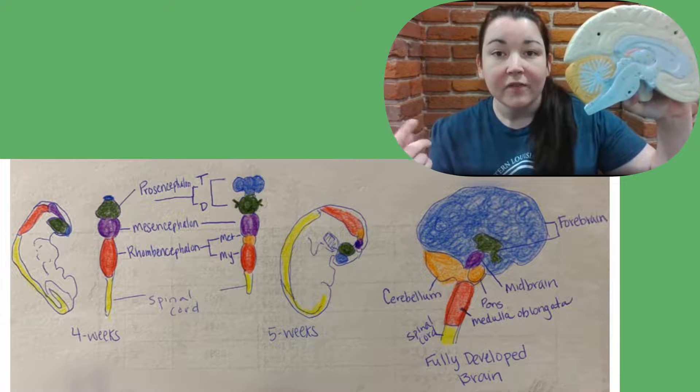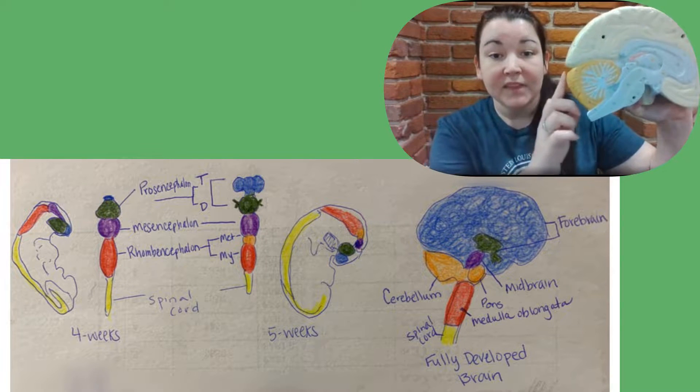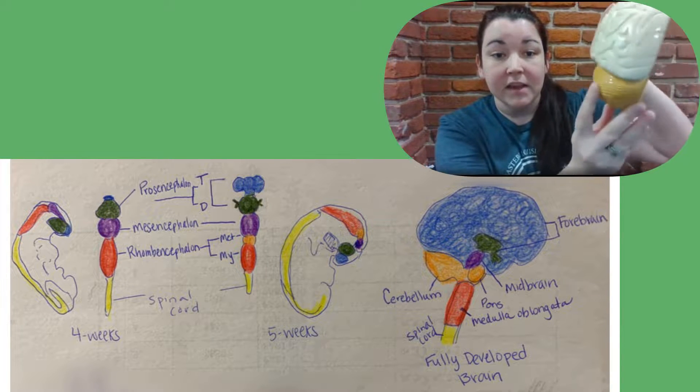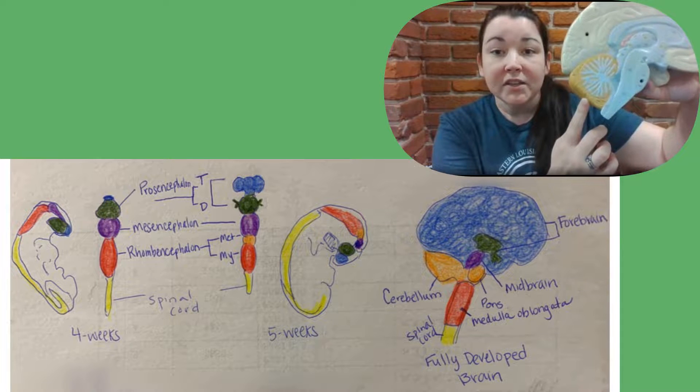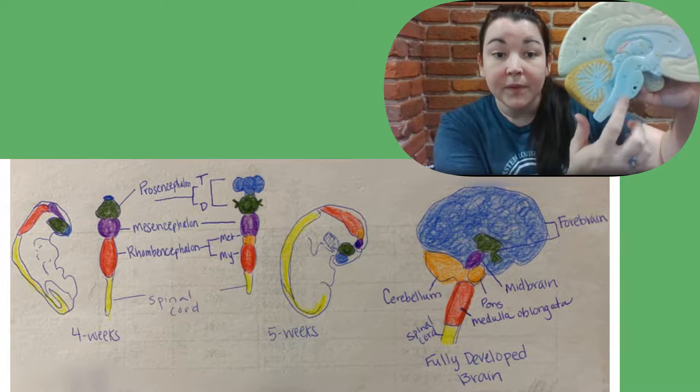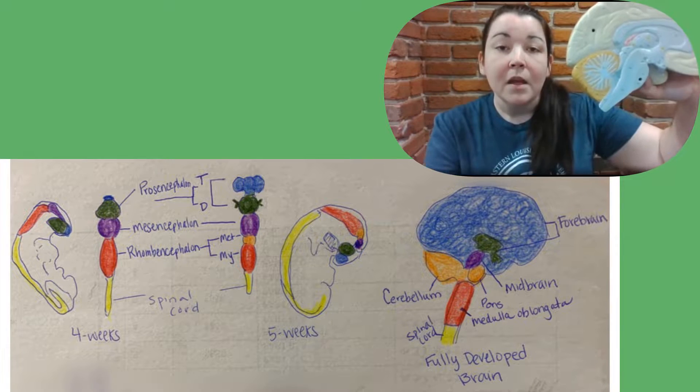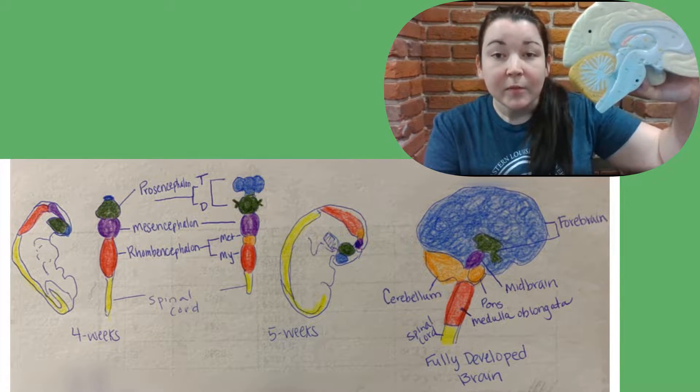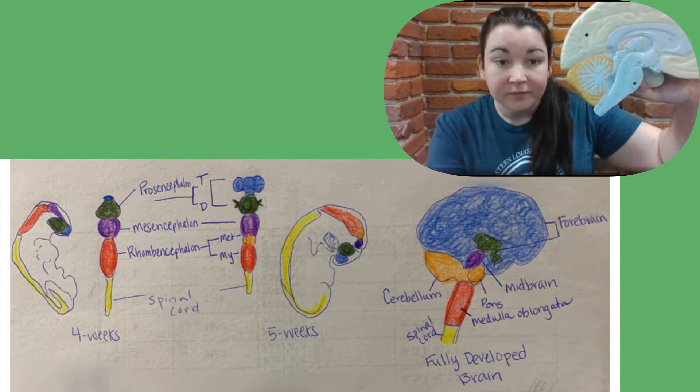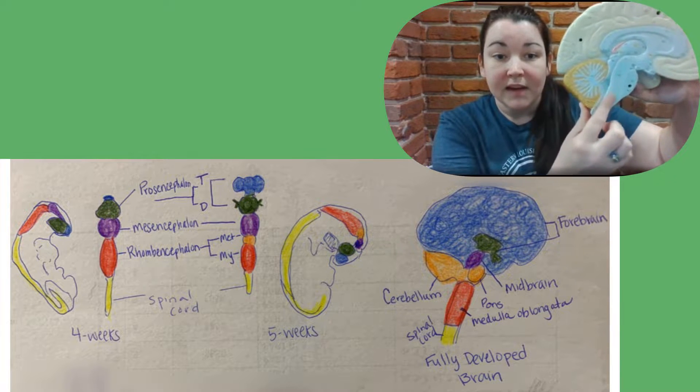Your metencephalon forms your cerebellum. That's this portion here in this yellow. In addition, it's going to form the pons. The pons is located here at the belly or the chest of your seahorse. The myencephalon ends up forming your medulla oblongata. That would be located here.